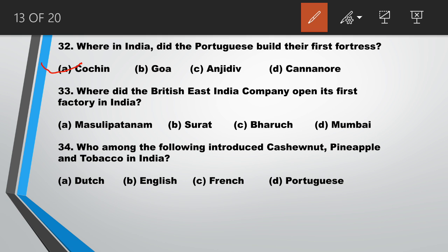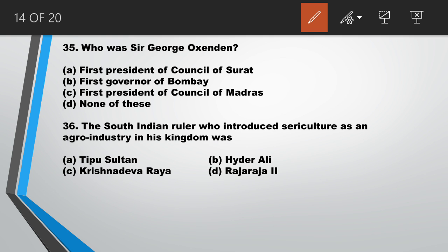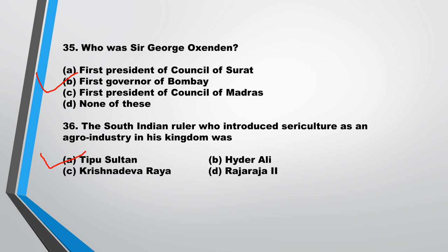Question number 33: where did the British East India Company open its first factory in India? Answer is B, Surat. Question number 34: who among the following introduced cashew nut, pineapples, and tobacco in India? Answer is the Portuguese. Question number 35: who was Sir George Oxenden? Answer is B, First Governor of Bombay. Question number 36: the South Indian ruler who introduced sericulture as an agro-industry in his kingdom was answer A, Tipu Sultan.